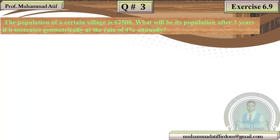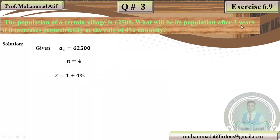The village population is 62,500. You have to find the population after 3 years if it grows at 4% annually. Here, A1 = 62,500. We take N = 4 because when the question says 'after 3 years', the 4th year is included. So N = 4.